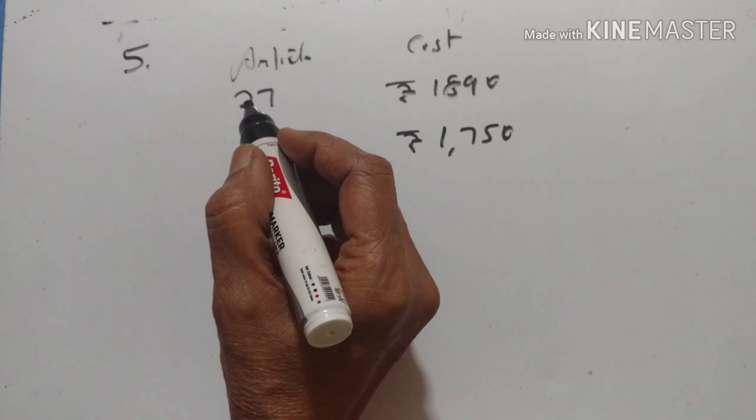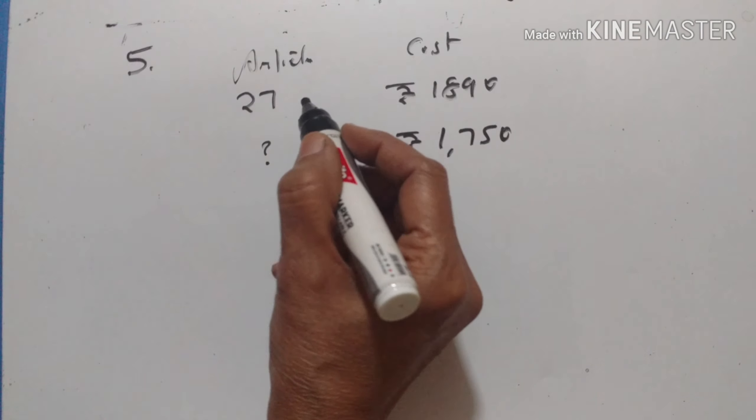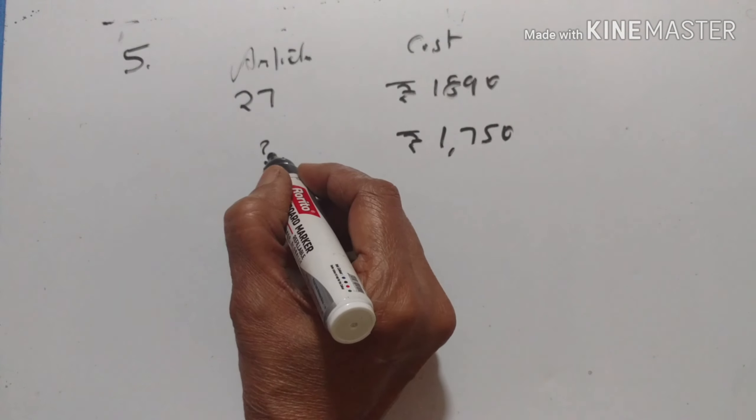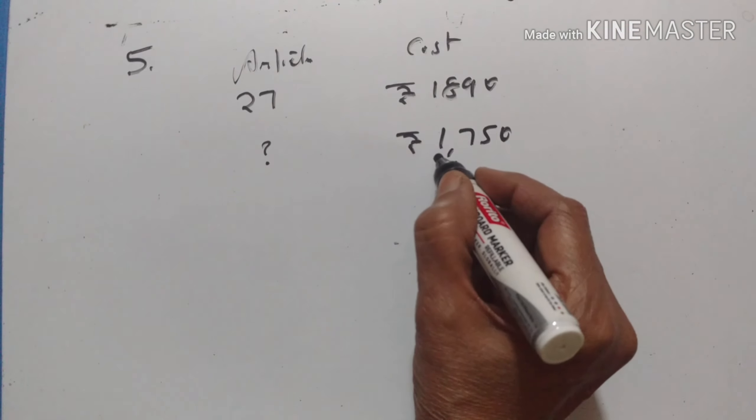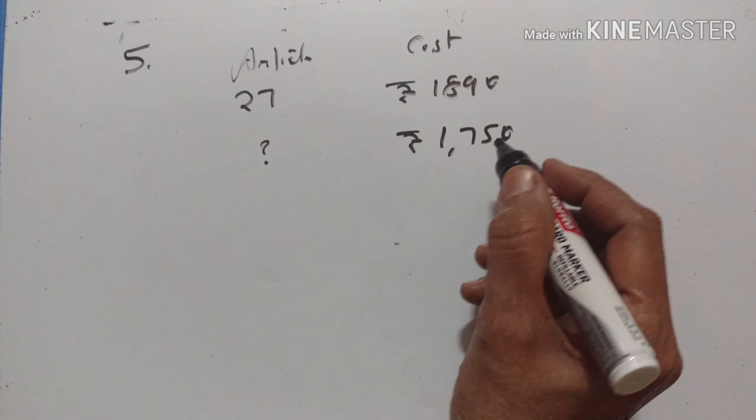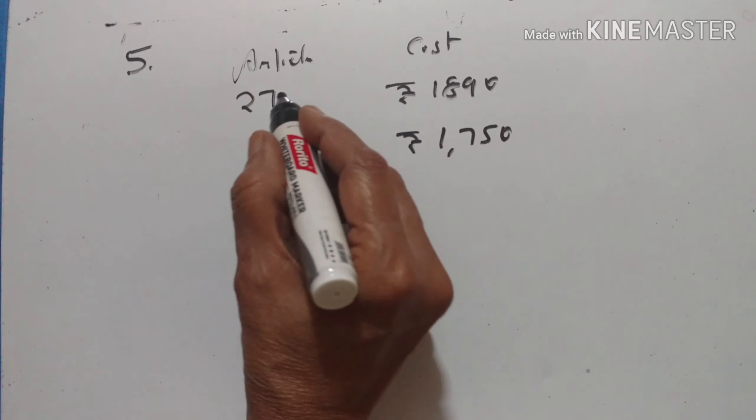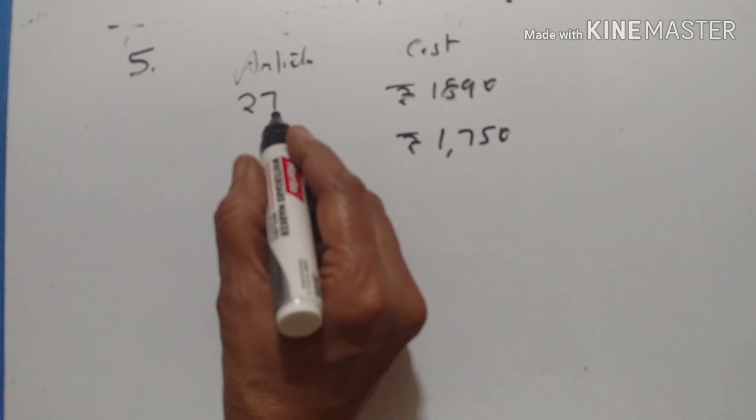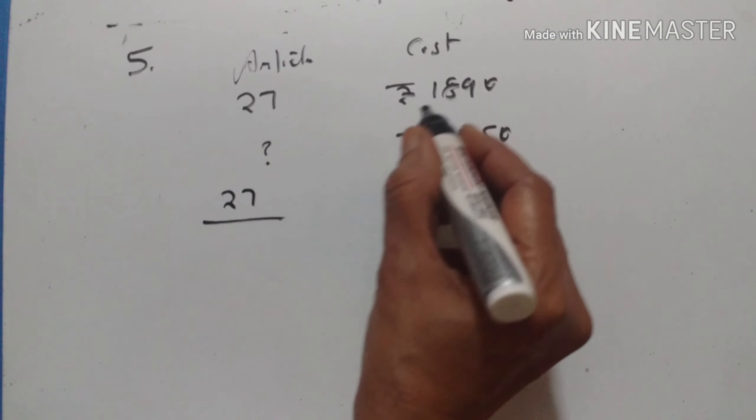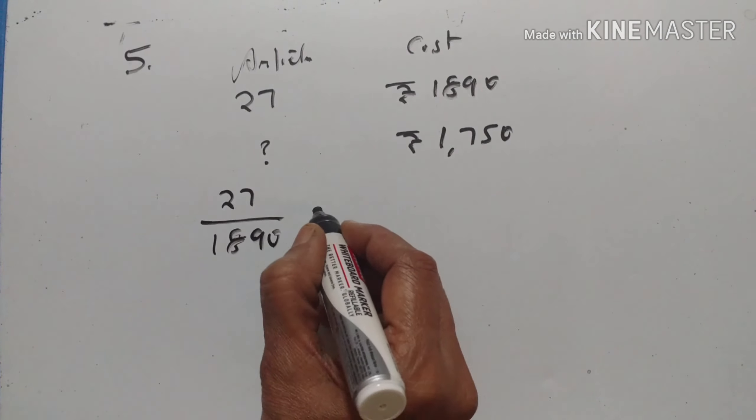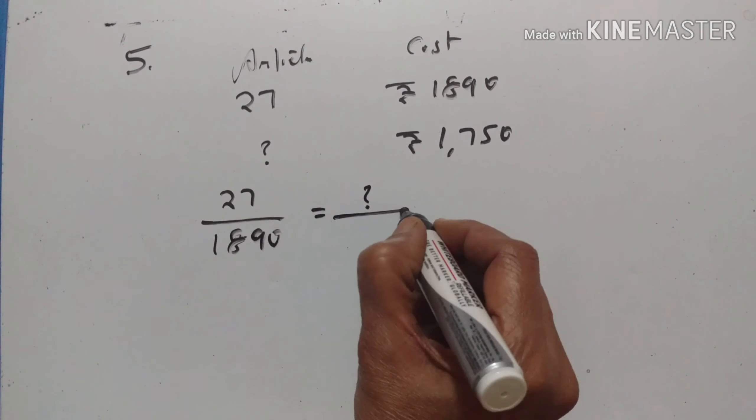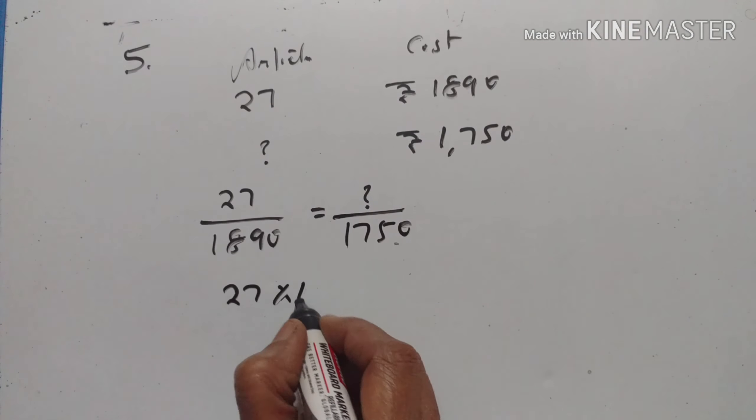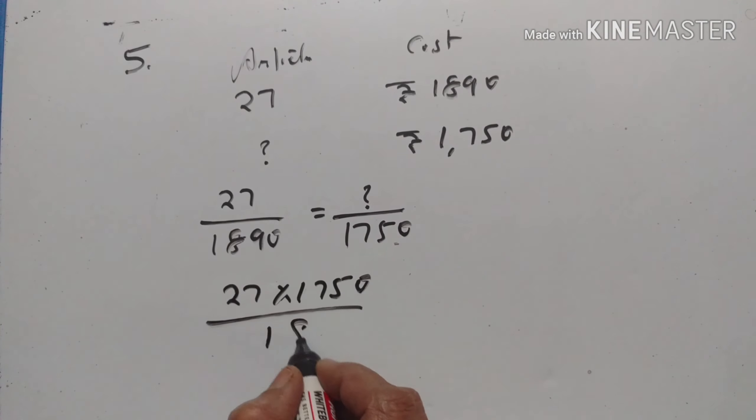Fifth problem. If 27 identical articles cost Rs. 1890, how many articles can be bought for Rs. 1750? X1 upon Y1 is equal to X2 upon Y2. So 27 into 1750 upon 1890.